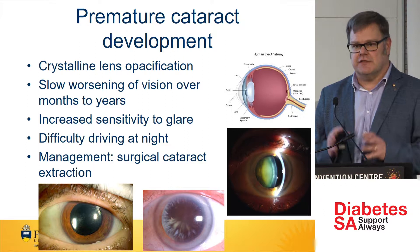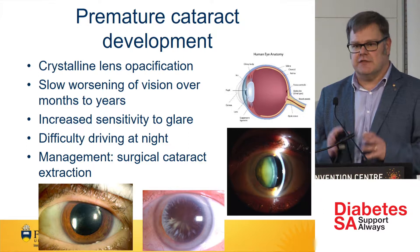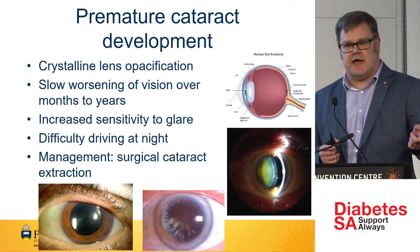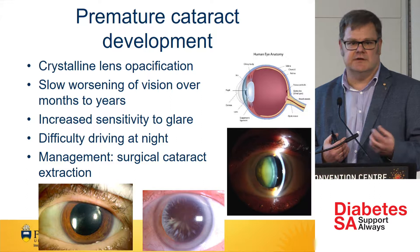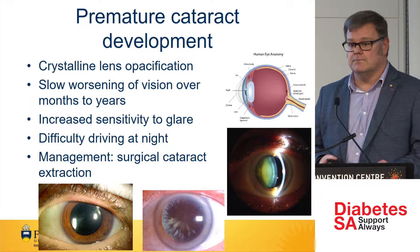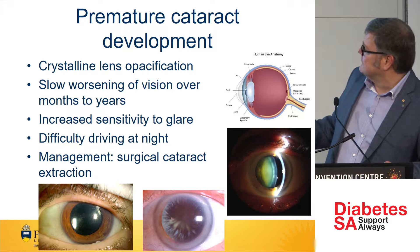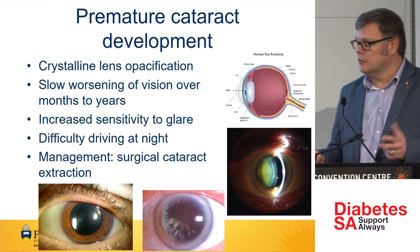A cataract is the lens inside the eye going hazy. This is caused by the same process as the fluctuating vision — the fluid coming in and out of the natural lens inside the eye causes the tissues to dysfunction and they start going hazy. We all get cataracts eventually, but with poor glycemic control, the patterns are actually quite different.